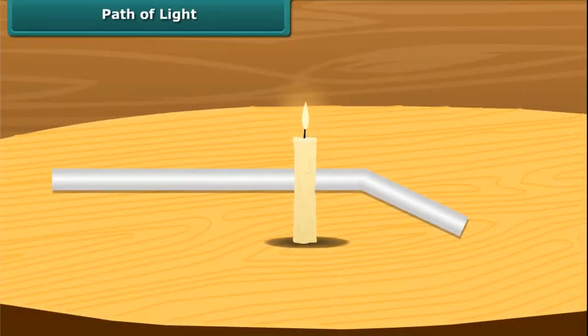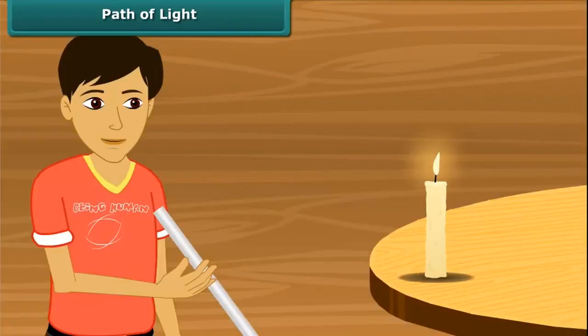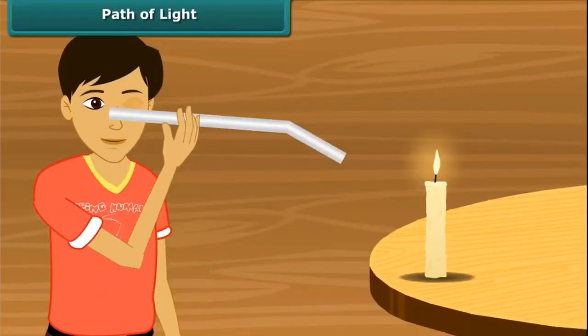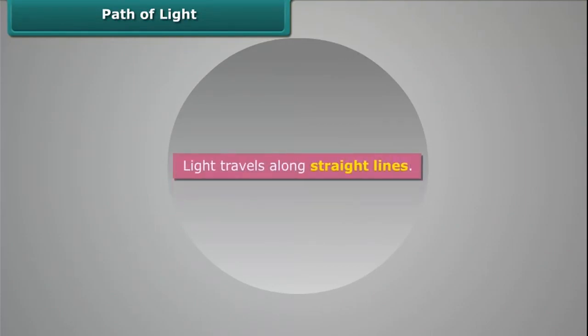Now take a bent pipe and look at the candle through it. Are you able to see the candle's flame through it? Probably not. So now you know that light travels along straight lines.